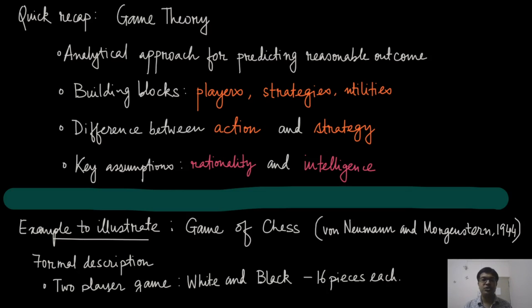There are two key assumptions of Game Theory which we have already mentioned. Those are rationality and intelligence. We will also make a formal definition of these two things.